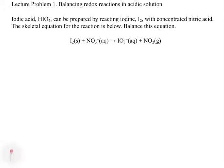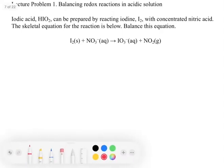The first step says to assign oxidation numbers to all the atoms present in the solution and then identify which reactants are oxidized and which are reduced. So for I2 solid, this is going to get an oxidation number of zero because it's an element in its standard state.